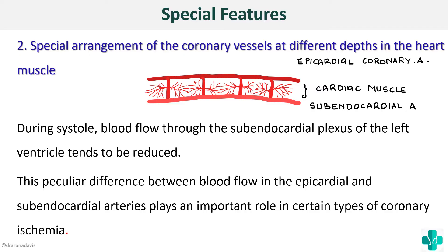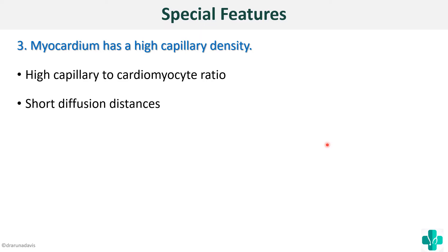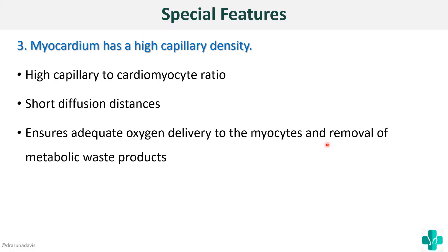Now we'll see the special features by which coronary circulation overcomes the problem of decreased blood flow during systole. First, the myocardium has high capillary density — a high capillary-to-cardiac myocyte ratio — so that even though blood supply decreases, it can extract the maximum possible oxygen. Second is short diffusion distance: the distance between the blood vessel and the cell is very short, so the cell can get oxygen very quickly. This arrangement ensures adequate oxygen delivery and removal of metabolic waste.